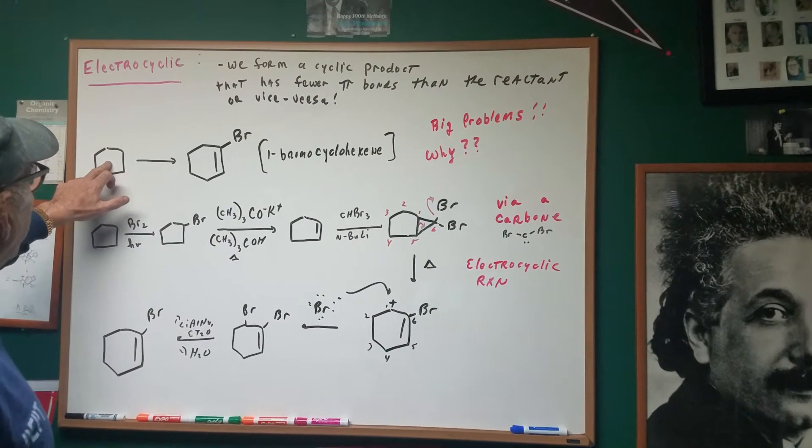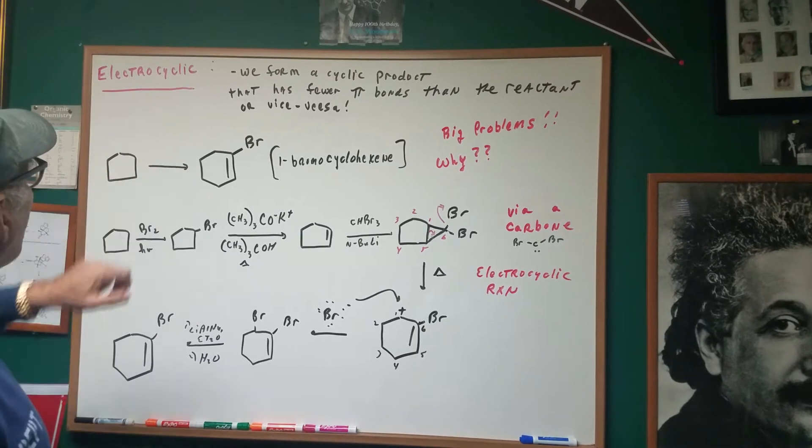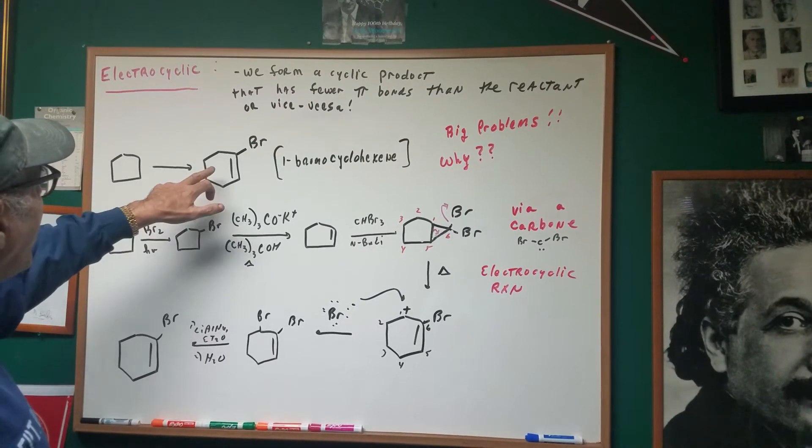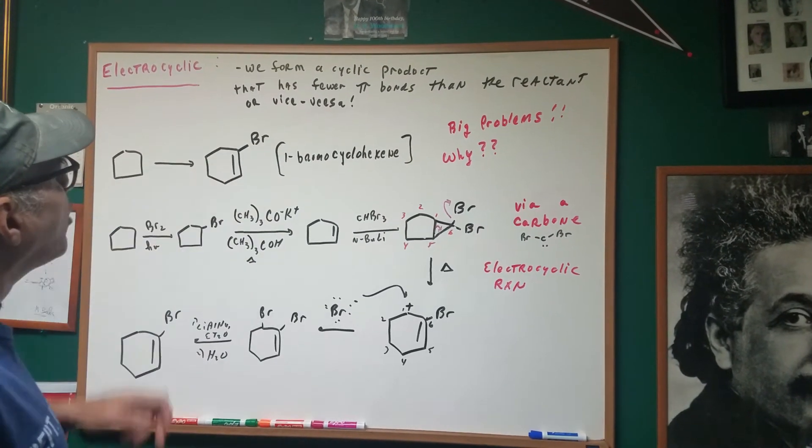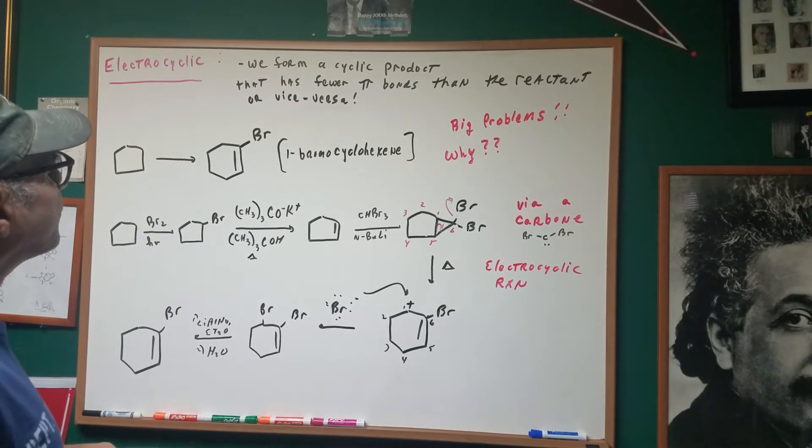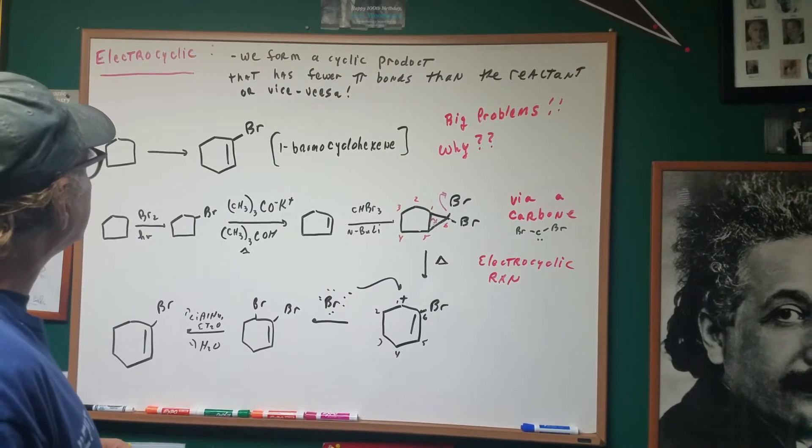What I want to do here is to start with cyclopentane and I want to make one-bromo cyclohexene.